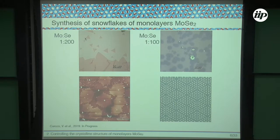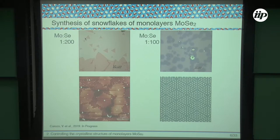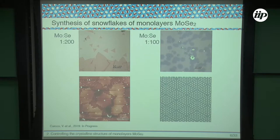If you change the ratio between molybdenum and selenium — decreasing to 1 to 100 — you get hexagonal-shaped samples. Looking carefully in AFM, you can see needles around the edges, which means you have a polycrystalline island. Just by controlling the ratio between these two precursors, you can go from a single crystal to a polycrystal. The polycrystalline sample will have many grain boundaries around the island.